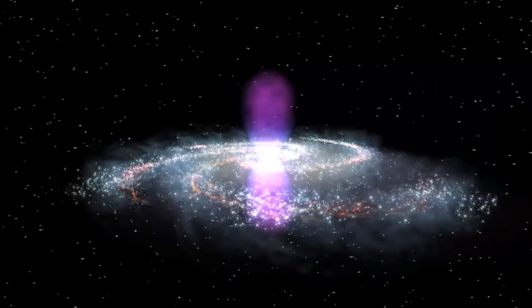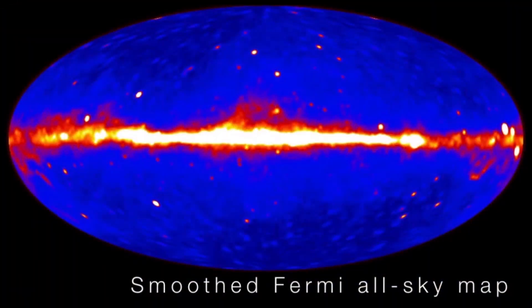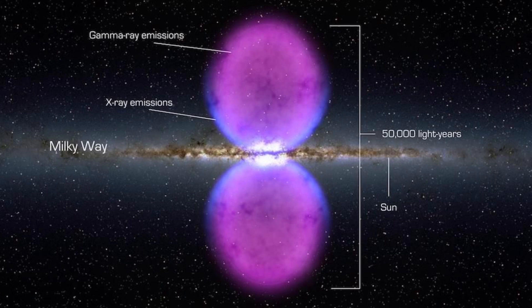Two enormous gamma-ray structures extending over 25,000 light-years away from the center of the Milky Way, called Fermi Bubbles, have baffled scientists for years. Nobody knows where they come from.